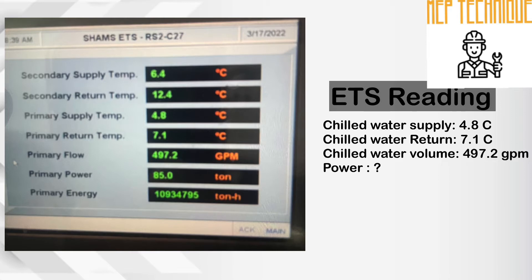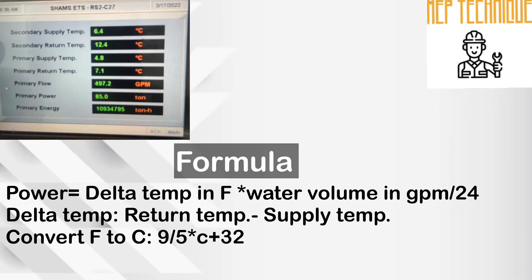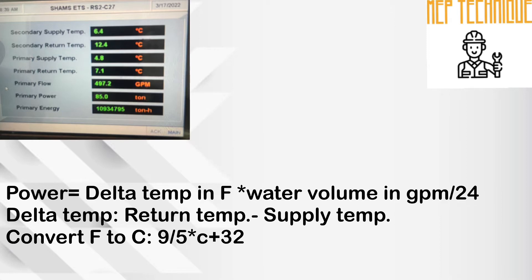We have to calculate the power by putting our formula. The formula of power is delta temperature in Fahrenheit multiplied by water volume in GPM, divided by 24. The formula to calculate delta temperature is return temperature minus supply temperature. To convert Celsius to Fahrenheit, the formula is F = (9/5)C + 32.